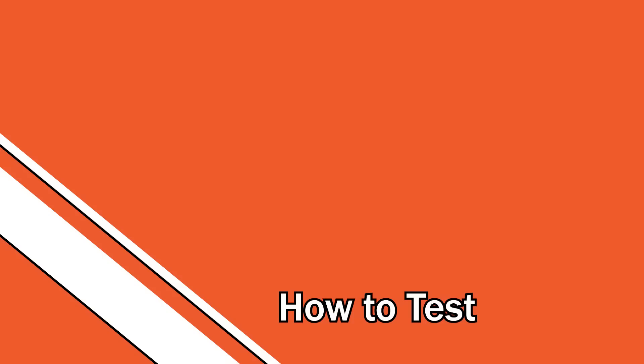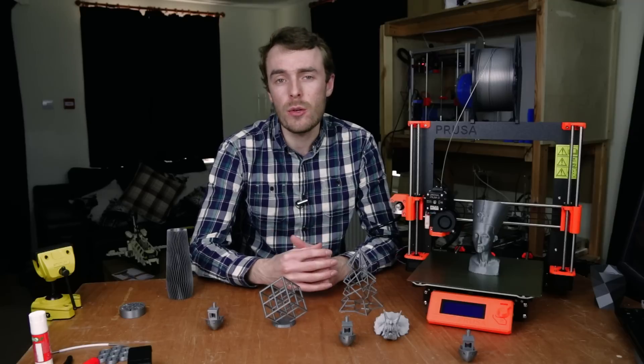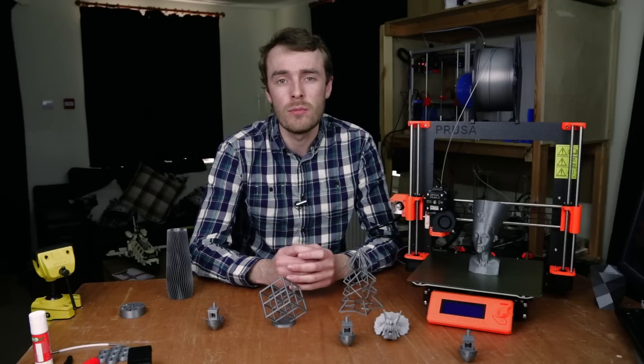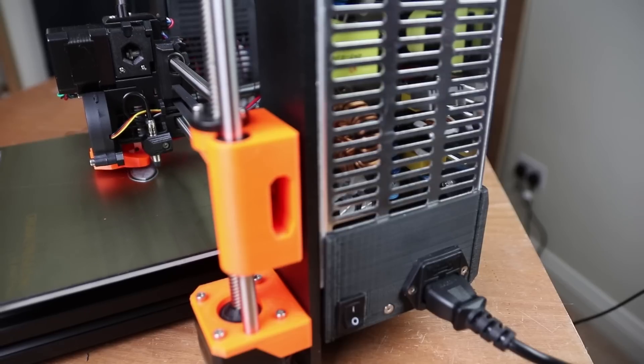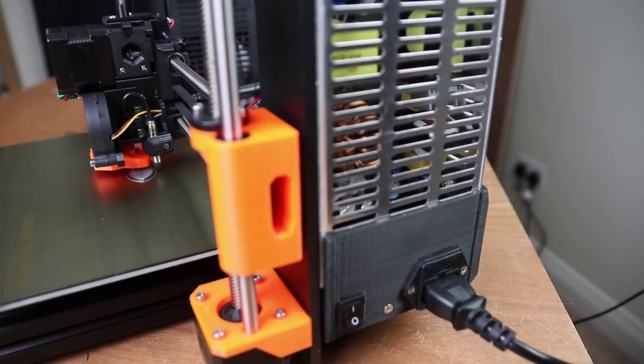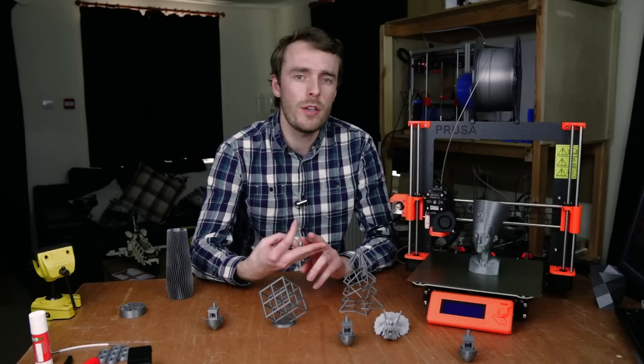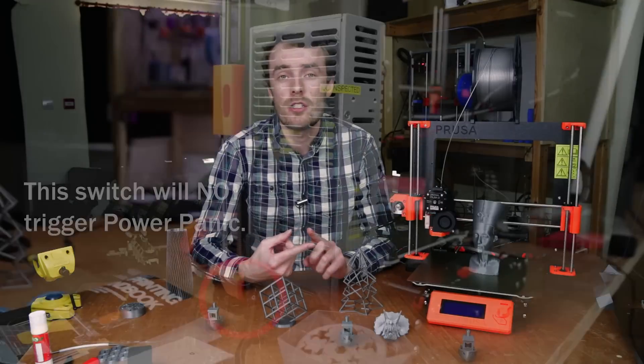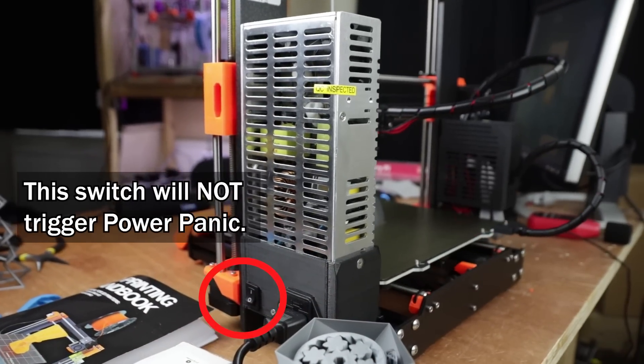Now you know how it works, how do you go about testing it? There are three ways to remove power from your printer: you can turn off the switch, you can pull the plug out, or you can turn it off at the wall. If you want power panic to trigger, you need to use one of the last two, removing the mains from the printer. Turning it off using the switch will not trigger power panic.